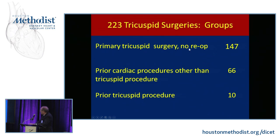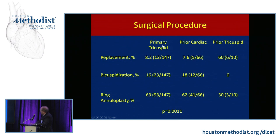My personal experience includes 147 primary surgery cases and 76 others — every one of those not-so-routine cases. Looking at primary, straightforward, prior cardiac, and prior tricuspid cases, the most common thing we did was ring annuloplasty followed by bicuspidization. Again, bicuspidization is a useful technique to have, but it's not the thing to use on an elective repair when you've got time.